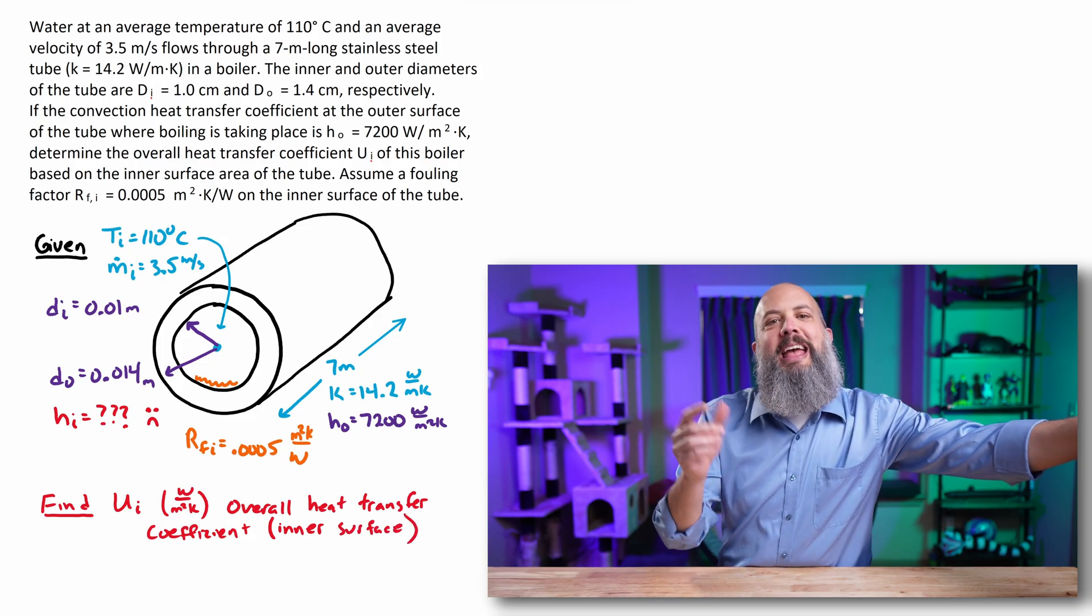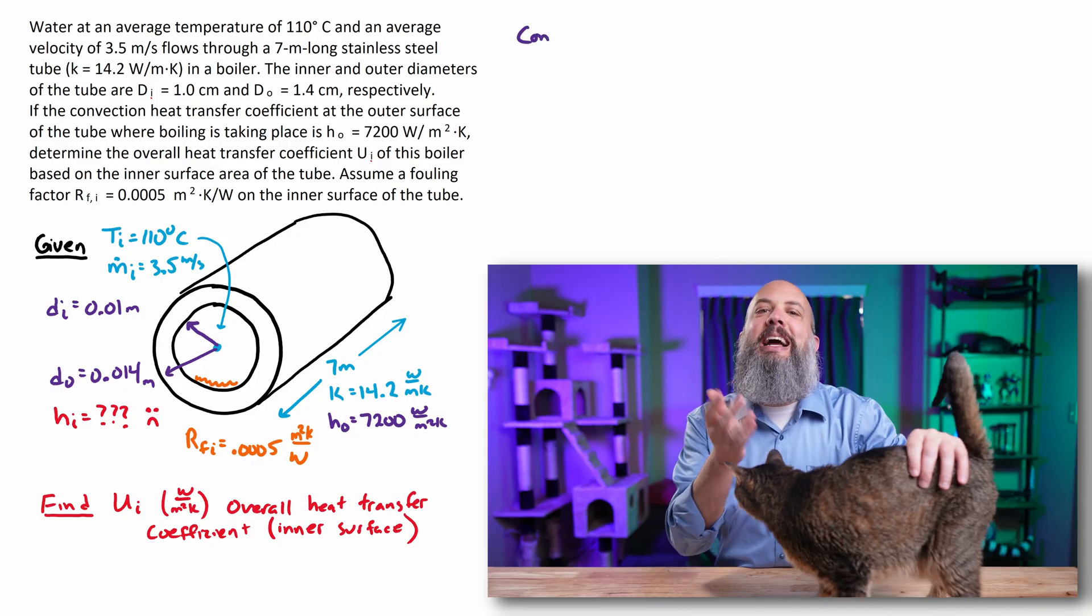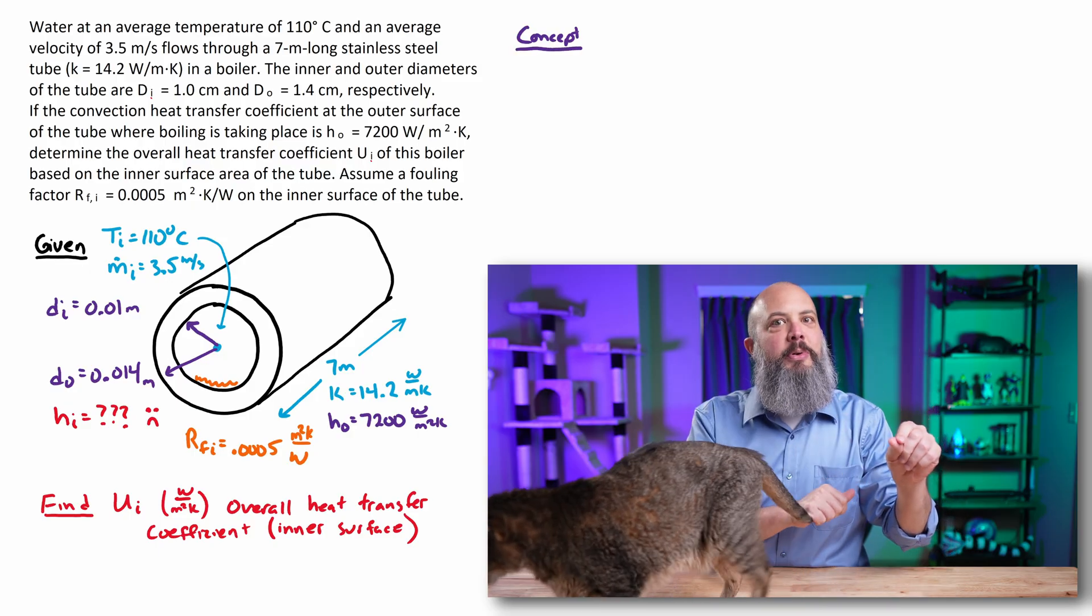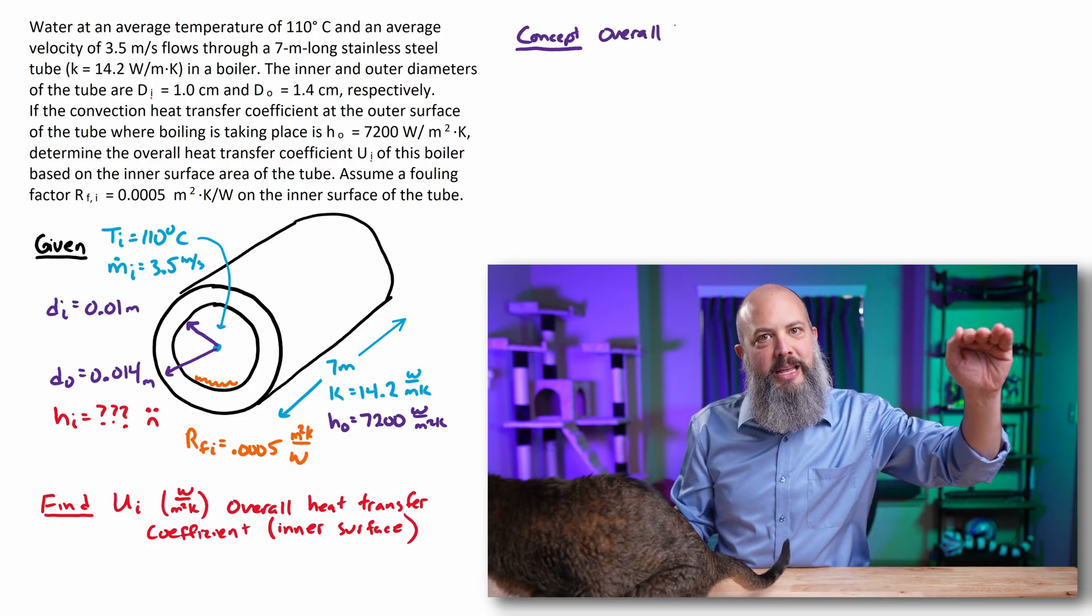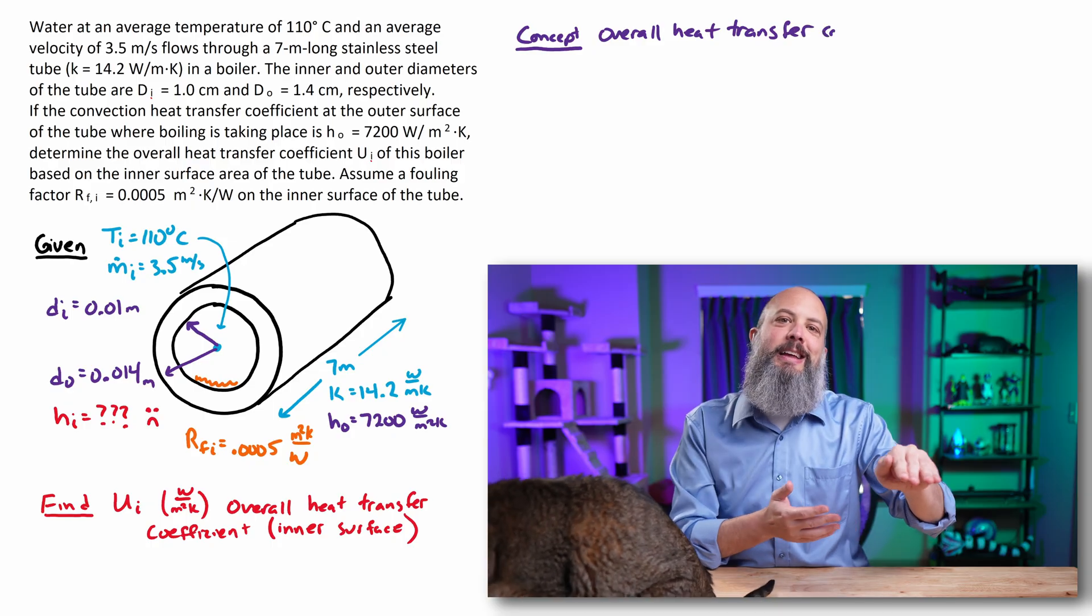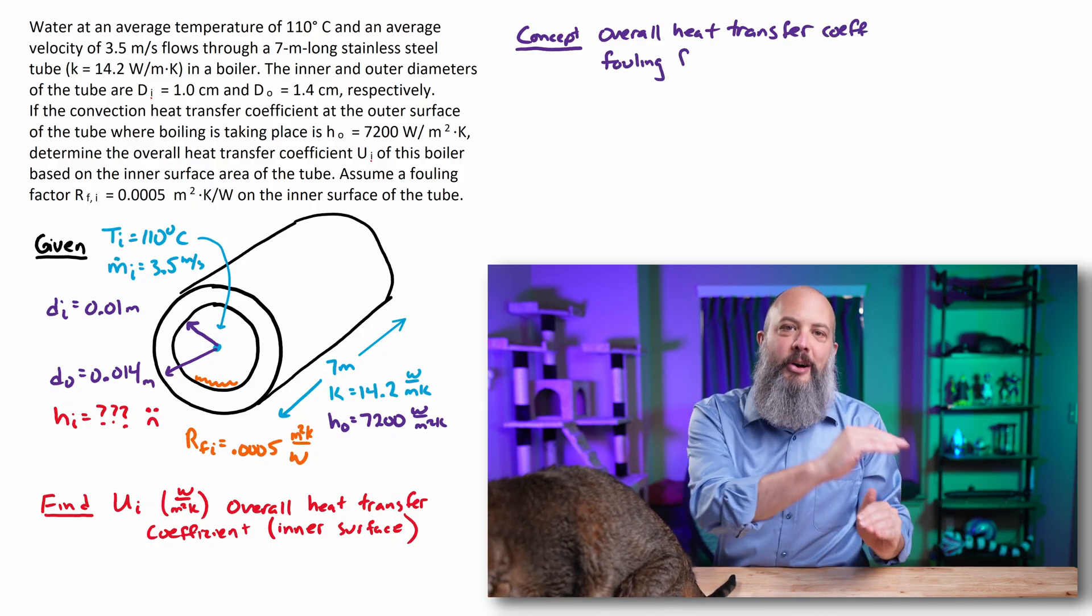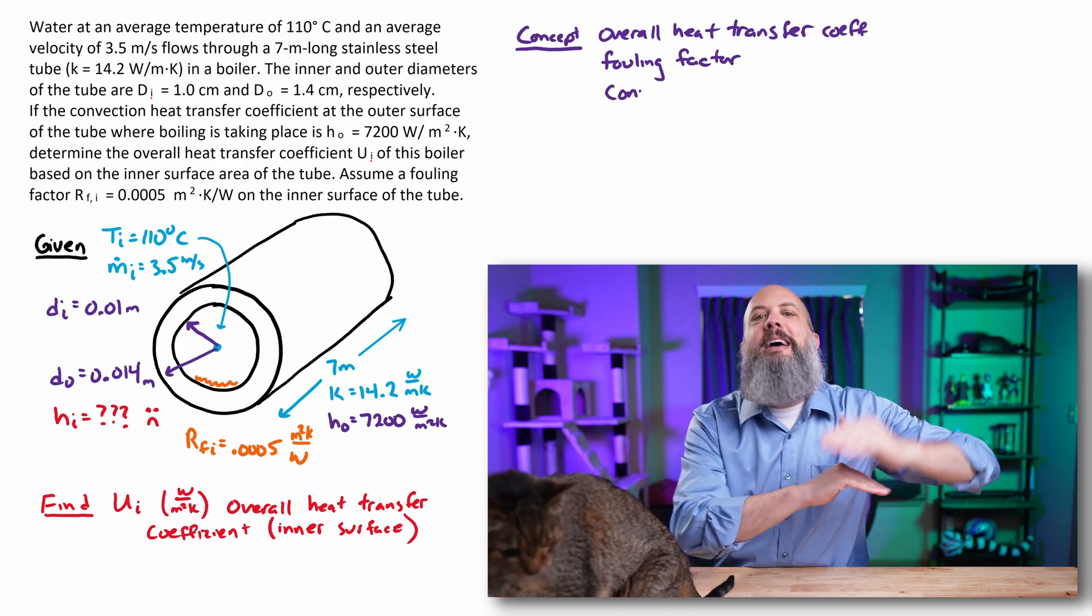In particular, we're looking for U on the inner surface, because UA is really the quantity you're interested in. It's not just U by itself, but it's U times the surface area. Since the inside of the pipe has a slightly different surface area than the outside of the pipe, you'll actually get a different value for U on the inside versus the outside.